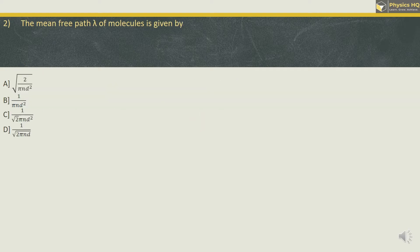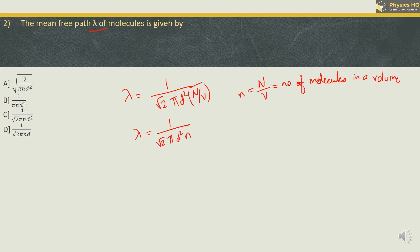The mean free path lambda of molecules is given by these options. The formula for lambda is given as 1 upon root of 2 pi d square capital N by V. Now this capital N by V is nothing but number of molecules in a given volume. So this can be denoted by small n. This becomes density and we can rewrite the formula as 1 upon root of 2 pi d square n. So our correct option is option C.